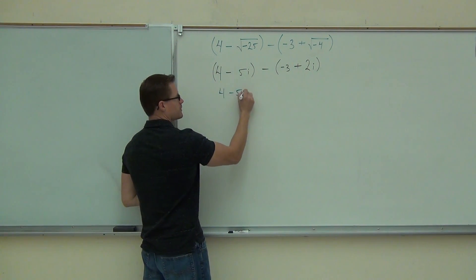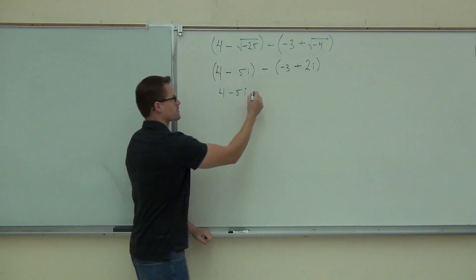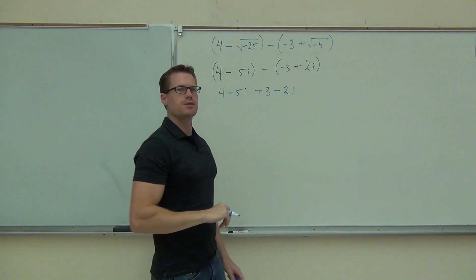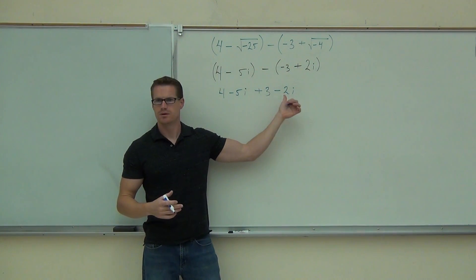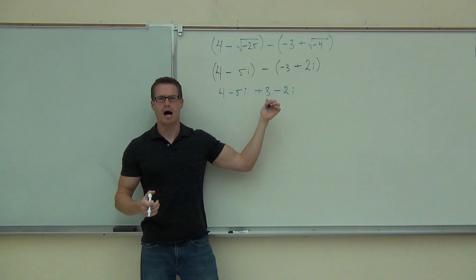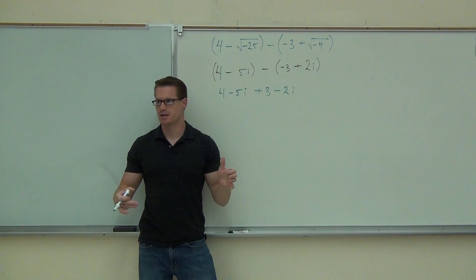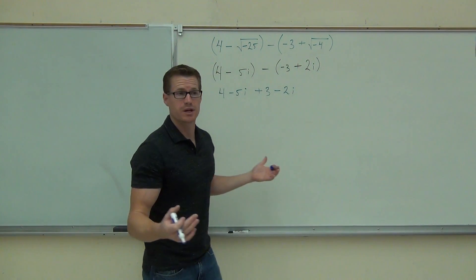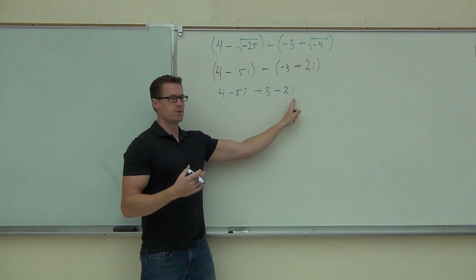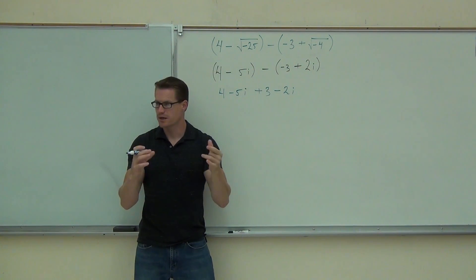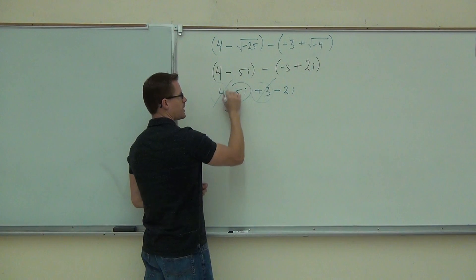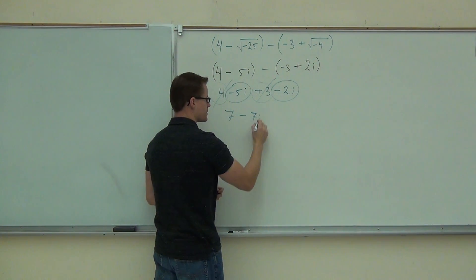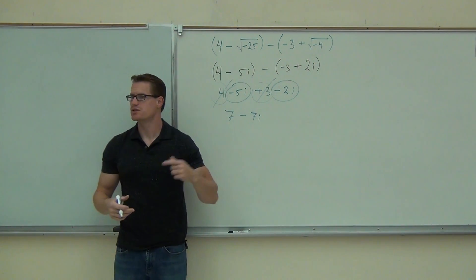So we'll have 4 minus 5i. What's next — plus or minus? Plus. And then what? Minus 2. Essentially what we're doing is combining like parts, very similar to combining like terms. Remember, i is not a variable. I is the square root of negative 1 — not negative 1 itself, because i squared is negative 1. So we're really combining a couple of like roots. We'll combine 4 and 3 to get 7. We'll combine minus 5i and minus 2i to get minus 7i. The real part is 7, the imaginary part is negative 7i. We're done.